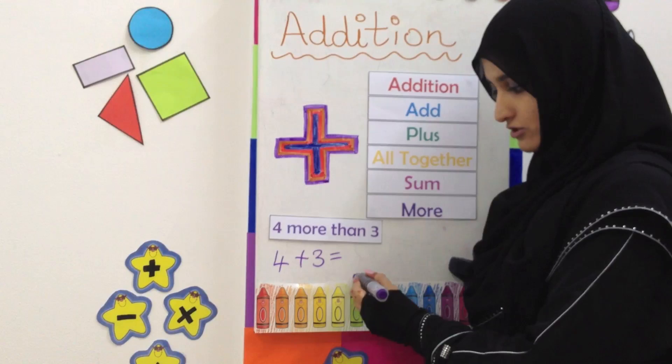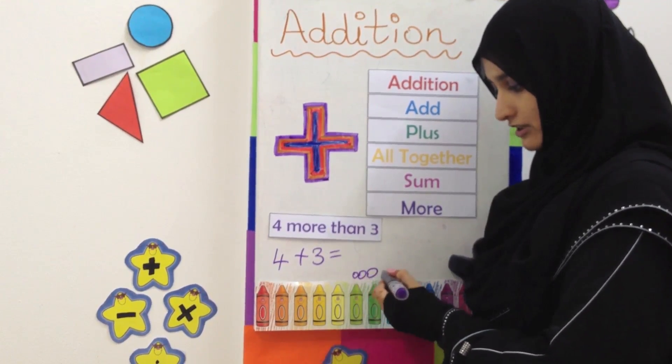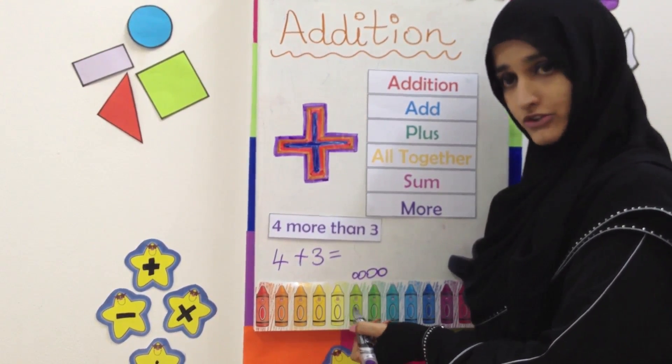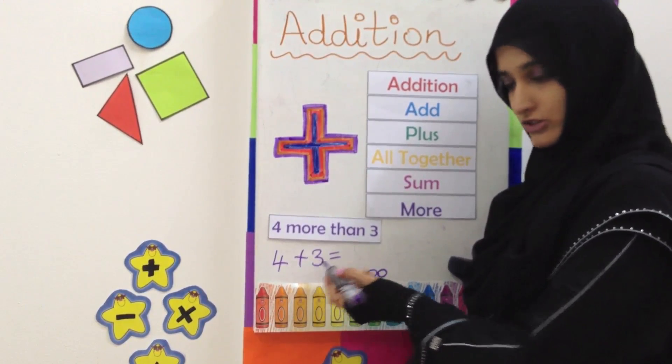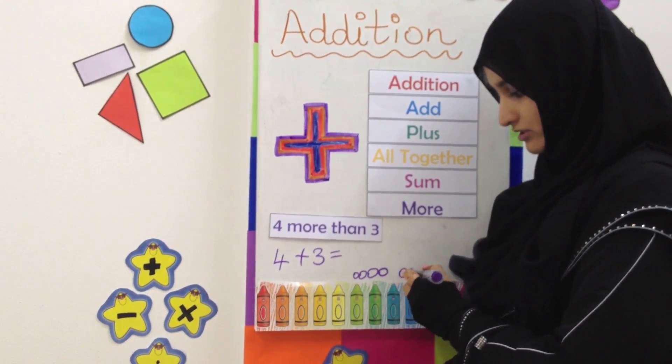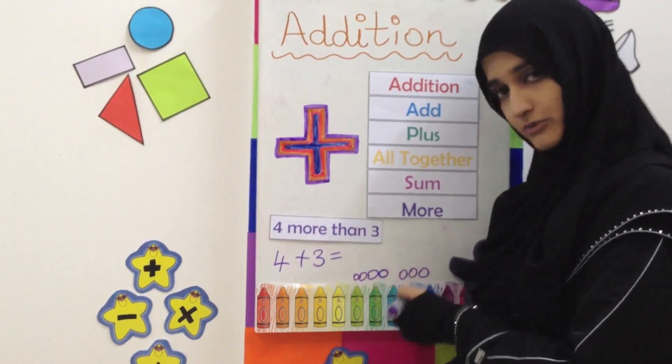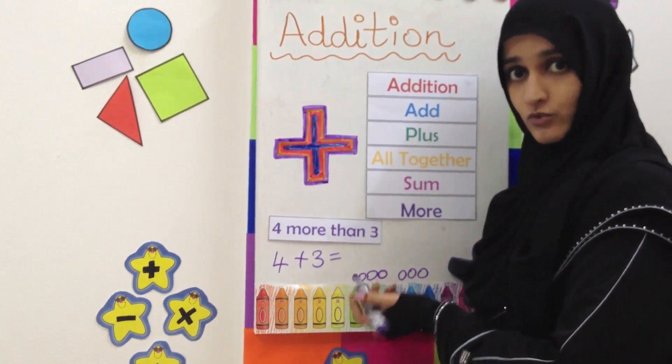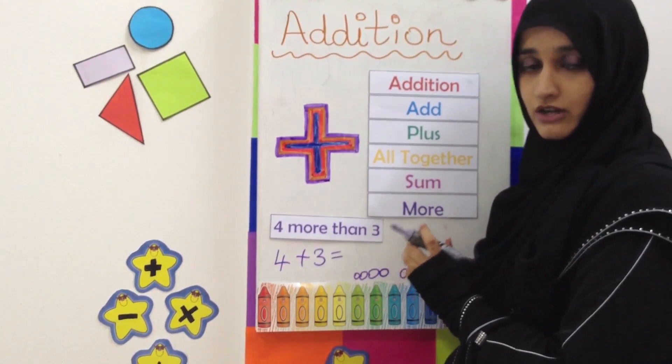We are going to draw four balls first: one, two, three, four. And now we are going to draw the other three balls, which we see here: one, two, three. When we are going to count all the balls we have drawn together, we count them together, we find out our answer.